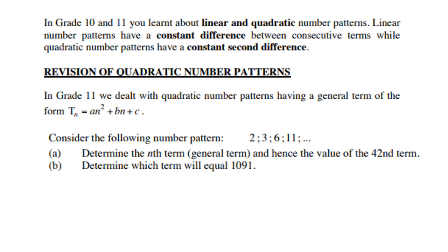Let's consider the following number pattern: 2, 3, 6, 11. The first question is, determine the nth term, that means the general term, and hence the value of the 42nd term. And B, determine which term will be equal to 1091.